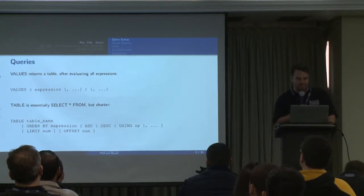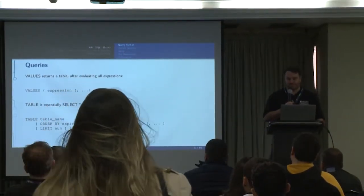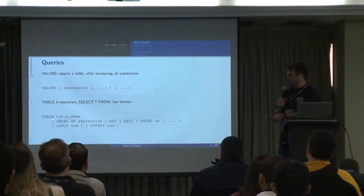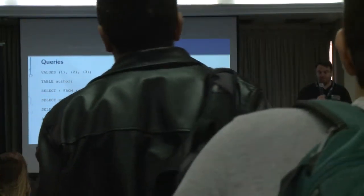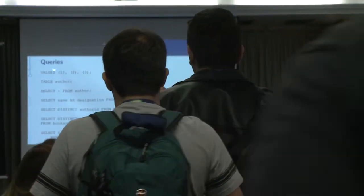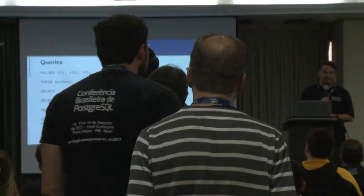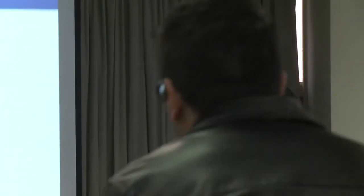A couple of interesting things not everybody's aware of: VALUES is a top-level query in Postgres — you can just say VALUES and it just works. So is TABLE, which is actually just a SELECT star FROM but way shorter. These are all valid queries in Postgres. You can say VALUES and this will give you a table of three rows. It's terribly useful for just playing around with data. You build a VALUES construct, and then you can put that anywhere you can put a table.